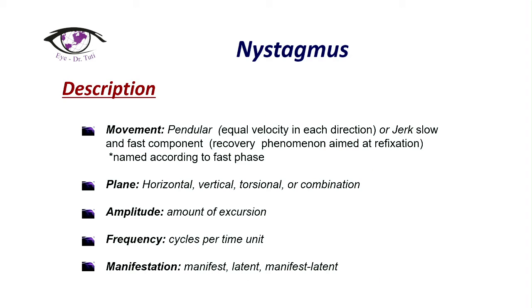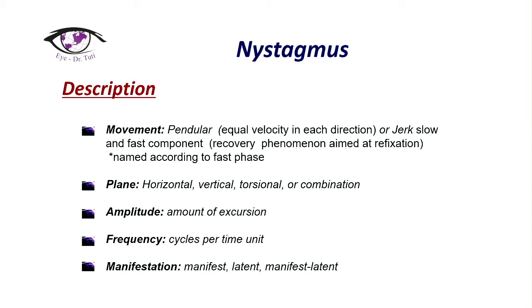When we describe nystagmus — and actually when I was on my residency course, every time I had to present a patient with nystagmus, I had to give a correct and complete description. So when we describe nystagmus, we have to talk about the movement, which can be pendular or jerk with a slow and fast component. We have to mention the horizontal, vertical, and additionally torsional or combined direction, as well as the amplitude, frequency, and manifestation. Nystagmus can be manifest, latent, or manifest latent.